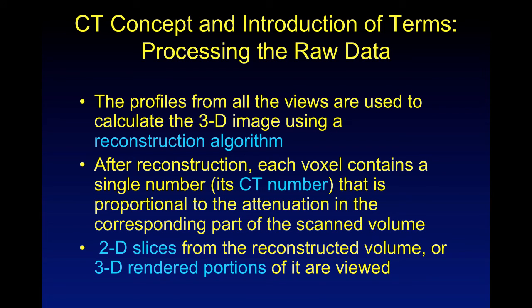The profiles from all of the views are used to calculate the 3D image using a reconstruction algorithm. In BME, engineering, and physics, there's a lot of work done on these reconstruction algorithms — you want them to be as fast but as accurate as possible. After reconstruction, each voxel will contain a single number, its CT number, and this number is proportional to the attenuation in the corresponding part of the scanned volume. You can look at 2D slices from the reconstructed volume, or 3D rendered portions of it — you can put all those 2D slices together to make up the 3D portion.